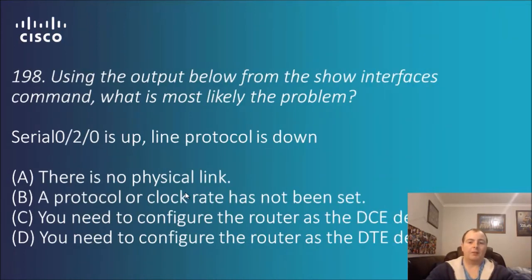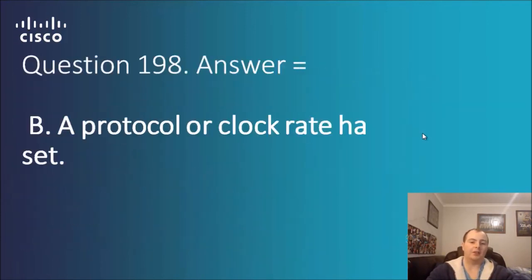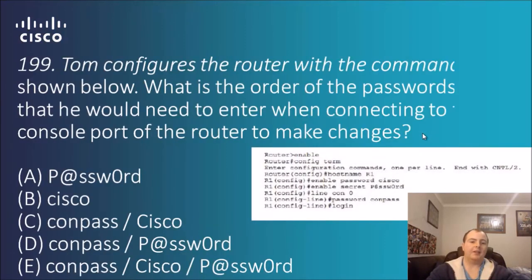Question 198: using the output from the show interfaces command, what is most likely the problem? Serial 0/2/0 is up, line protocol is down. When the line protocol is down, it generally suggests a problem between the two routers. The answer is that the protocol clock rate has not been set — it has to be set on one end, and also on the other end, so that the two routers can communicate.